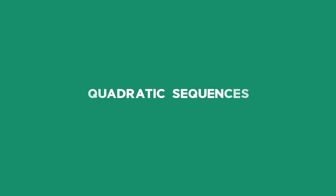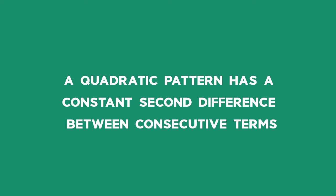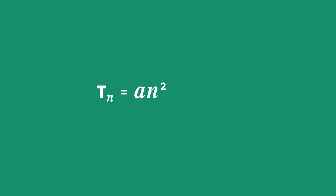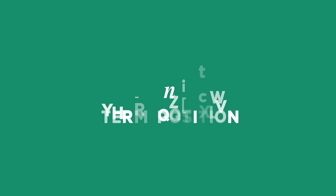Quadratic sequences. The definition of a quadratic number pattern is that it has a constant second difference between consecutive terms. The general form of a quadratic sequence is Tn = an² + bn + c, where n represents the term position.